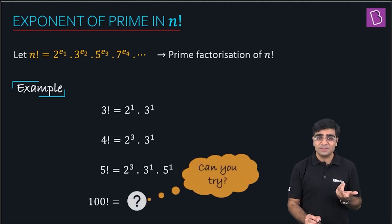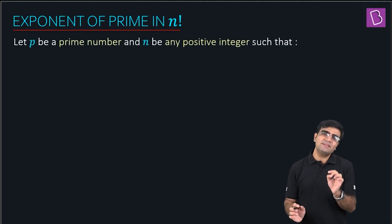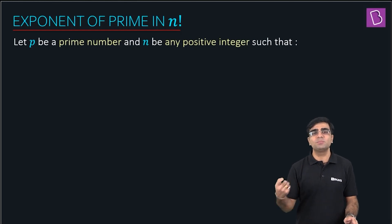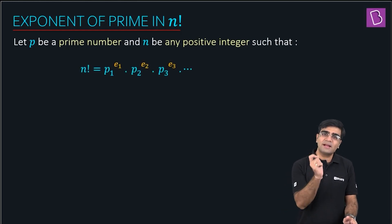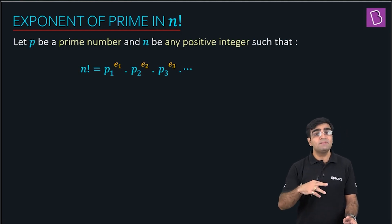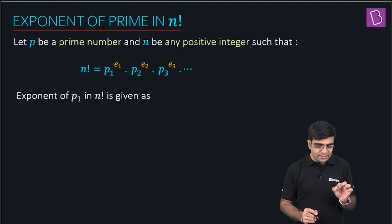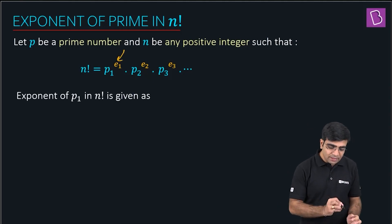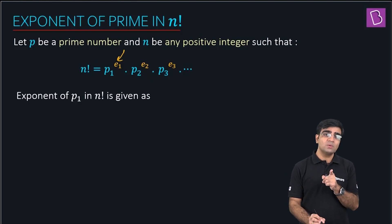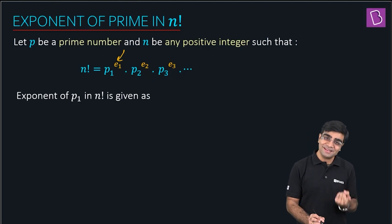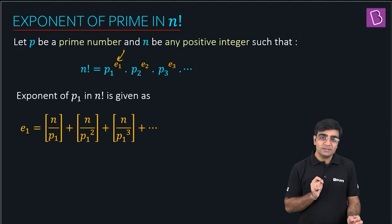The challenge comes when you have factorial 100 or factorial 2020. Let's say p is a prime number — I have prime numbers p1, p2, p3, which could be 2, 3, 5, and so on. A particular factorial n is written as p1^e1 · p2^e2 · p3^e3. The exponent of p1 in n! is e1. Now, write down the formula: if I want e1, the exponent of the prime number p1 in factorial n...